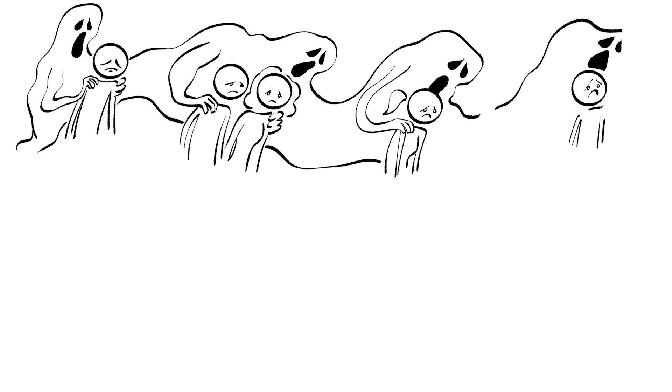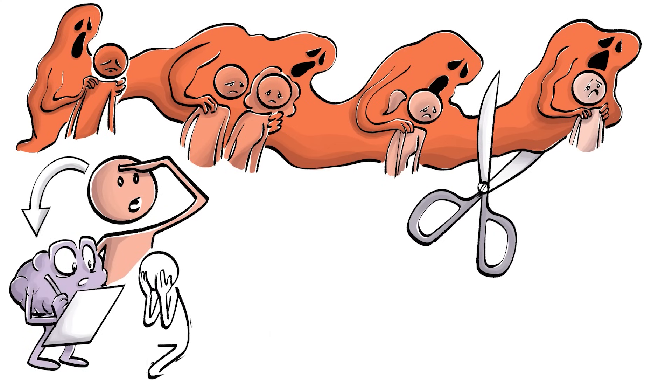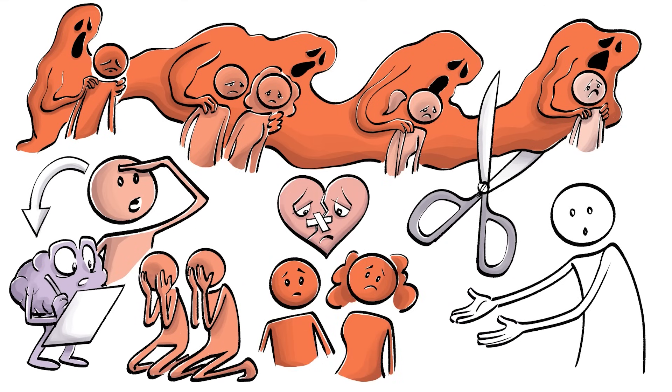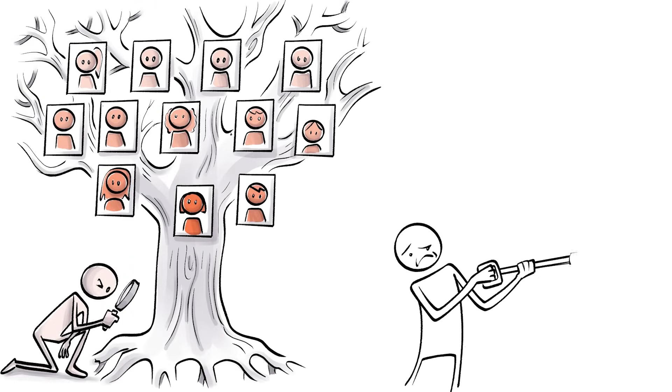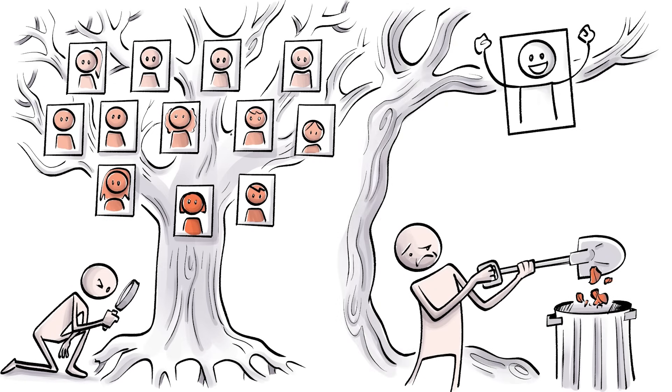One way to break this cycle of transgenerational trauma is to face our own history, developing a deep understanding of our parents' pain and the scars they inherited during childhood. The Hoffman process is one approach that aims to guide people through this. Once we understand our roots, we might be able to weed out some of the rotten parts and help the next generation to grow up strong and healthy.